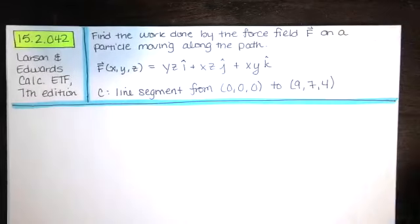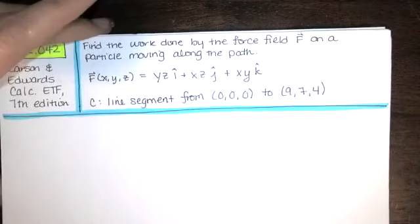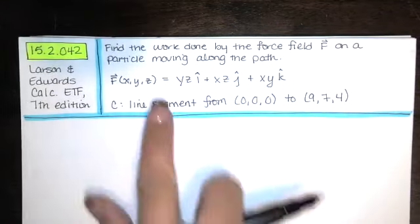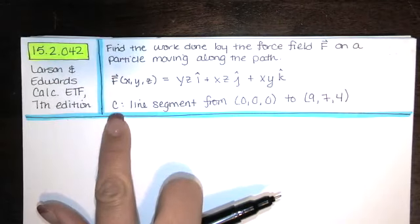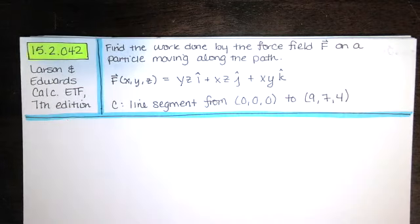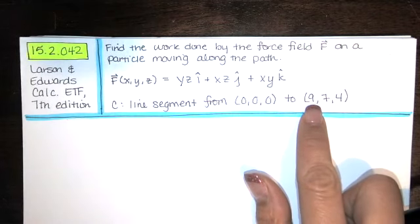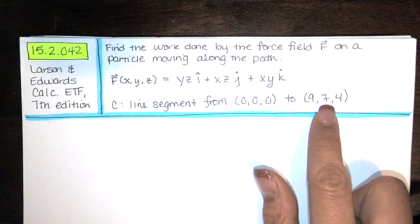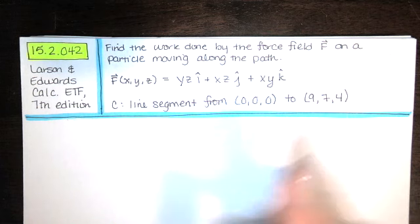We're asked to find the work done by the force field F on a particle moving along the path. This is our force field, and our path is given by C. It's the line segment from (0,0,0) to x equals 9, y equals 7, and z equals 4.